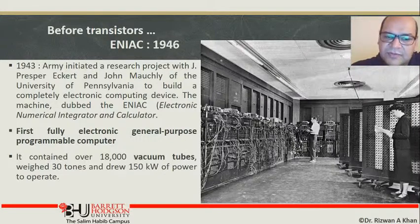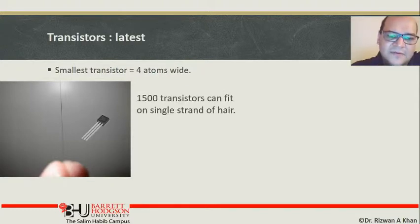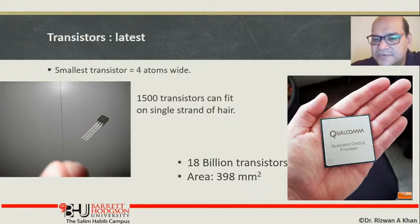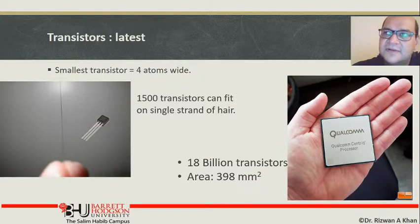With the advent of transistors, the size of machines got smaller exponentially. Now the smallest transistor has a width of four atoms, which means 1500 transistors can fit on one single strand of hair. One of the latest CPUs these days has 18 billion transistors in it. In ENIAC there were only 1800 vacuum tubes and it was the size of a whole room, but now the power has increased exponentially and the size has reduced exponentially. We can think of 18 billion transistors as 18 billion vacuum tubes on one single chip.